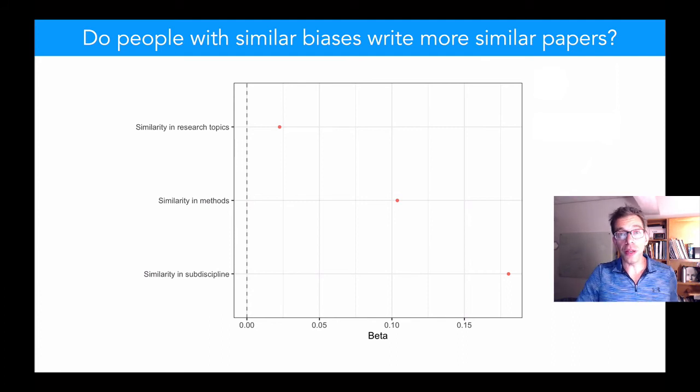Controlling for these three similarities, the similarity in their endorsement of these controversial themes, and to a lesser extent, their similarity on these cognitive traits, are further predictors of how similar their papers are.